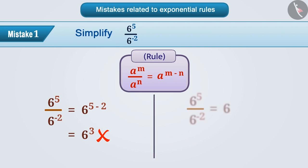Keep in mind that 5 minus minus 2 equals 5 plus 2, which equals 7. So the simplified form of the given question will be 6 to the power 7.